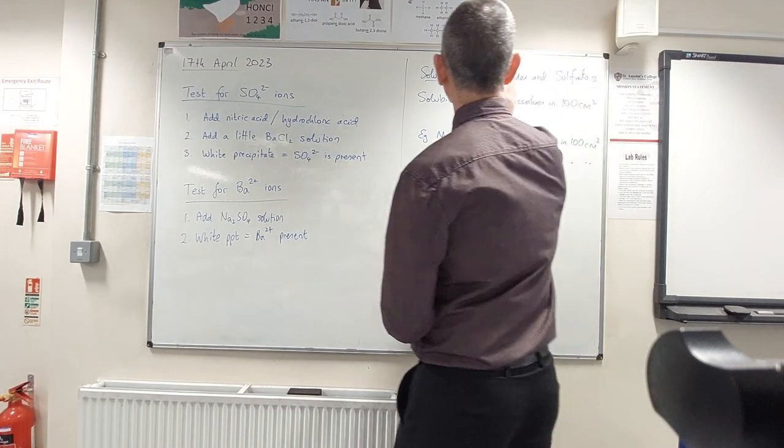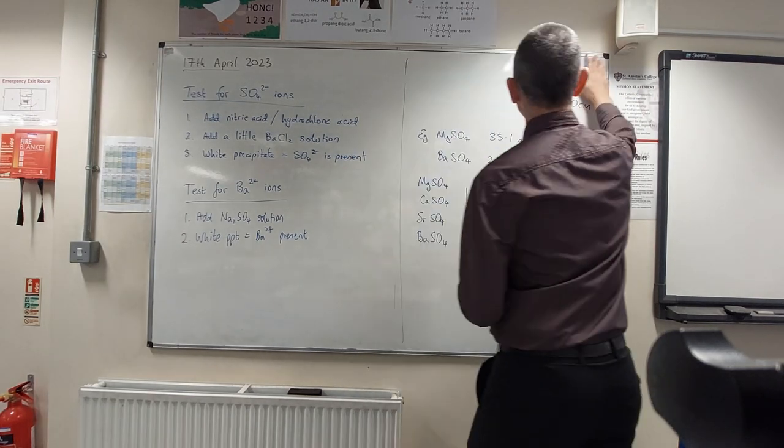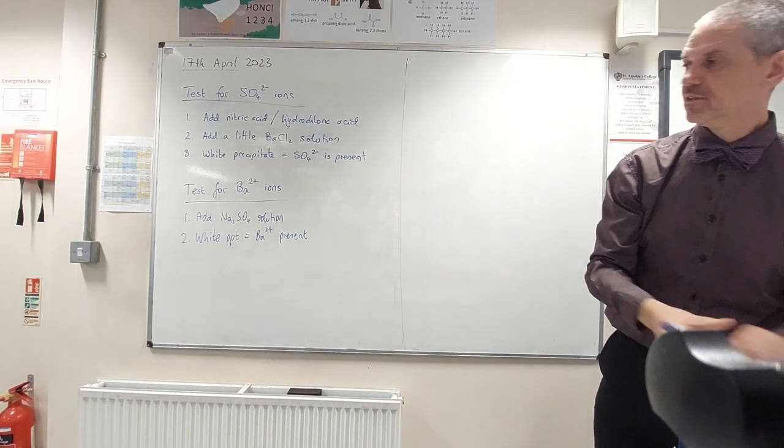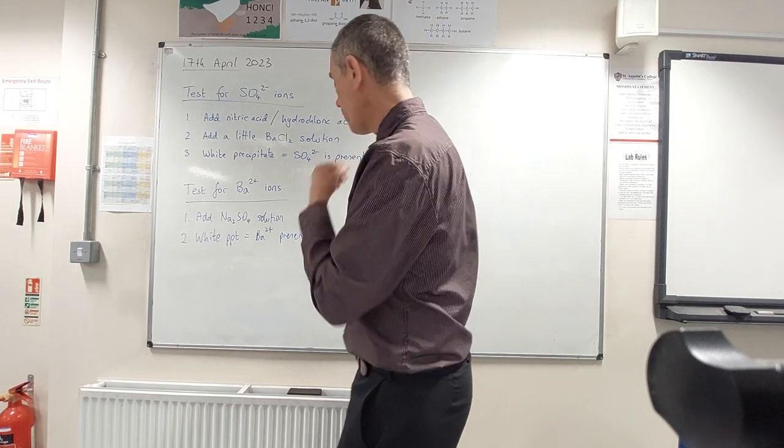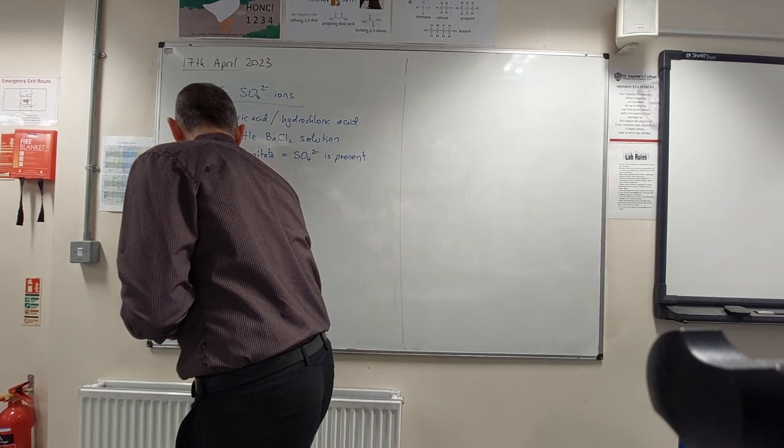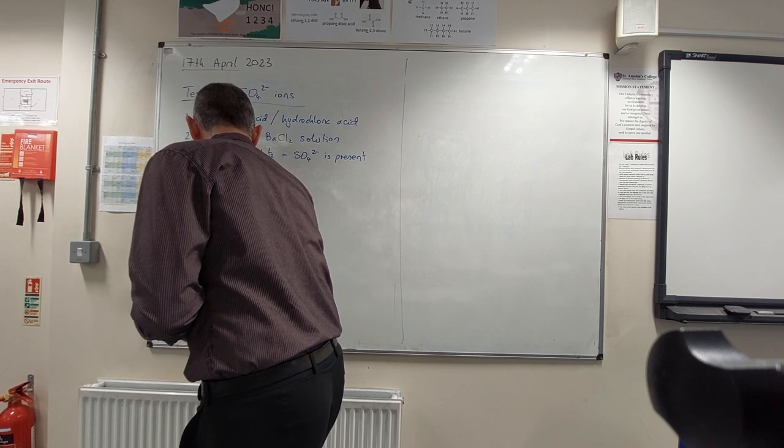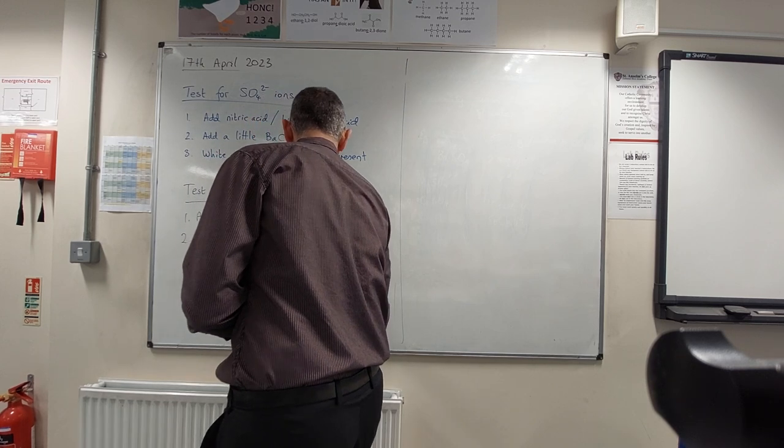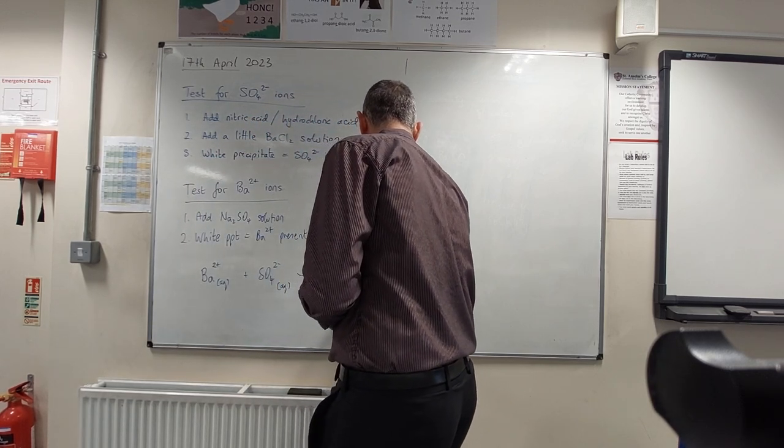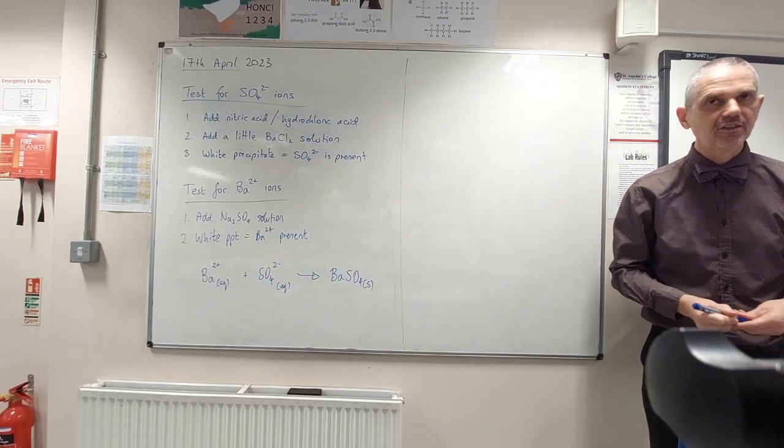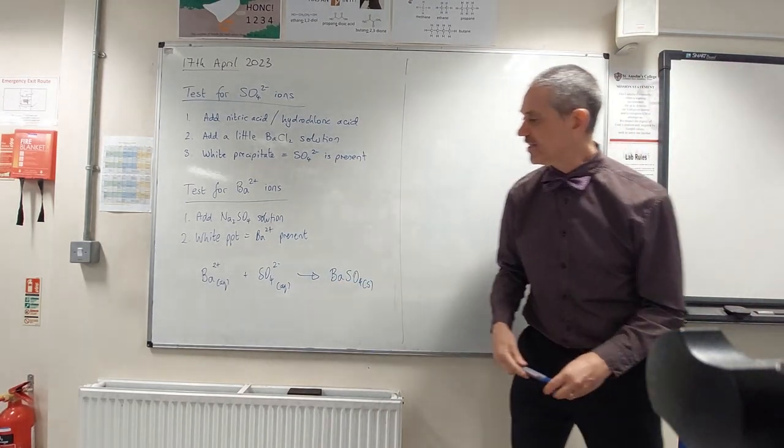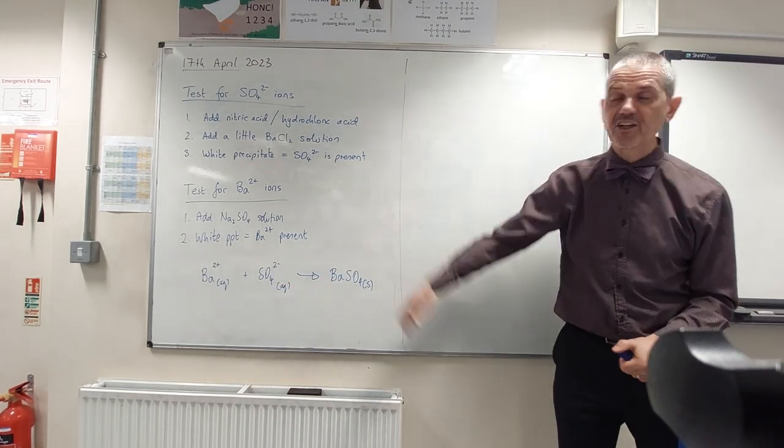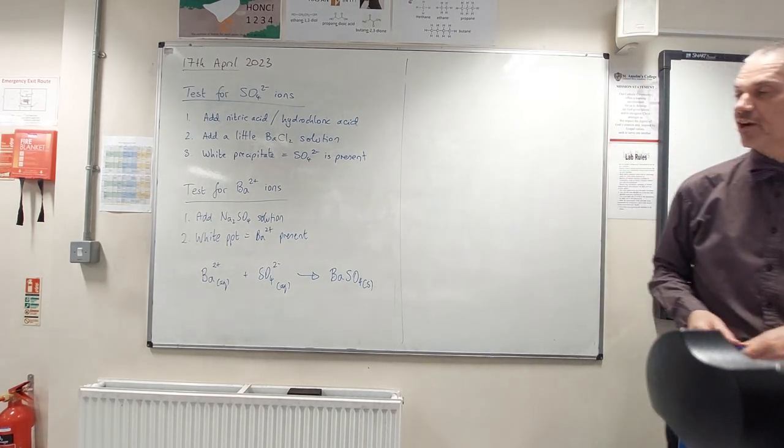Let's just remind ourselves about the tests for, oh, no, we just need to do an ionic equation first. Fairly straightforward for this. Remember, an ionic equation just shows the ions taking part in the reaction. So, barium ions, we get the sulfate ions to make barium sulfate. For either of those two tests, it's going to be the same, the same ionic equation.